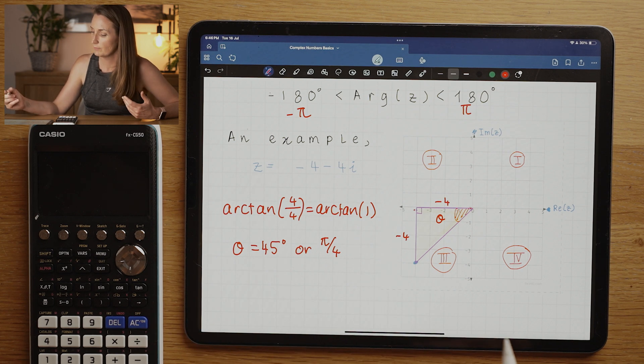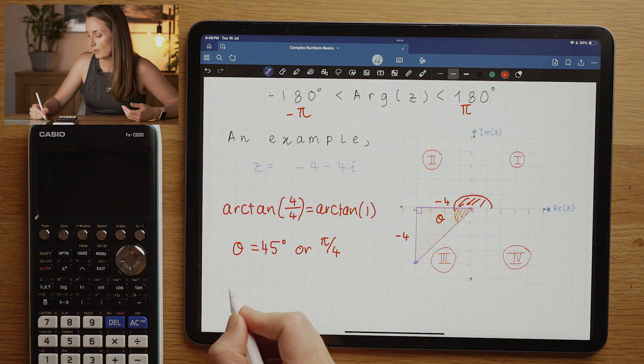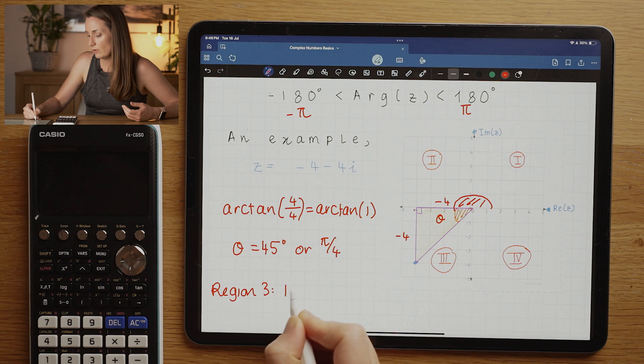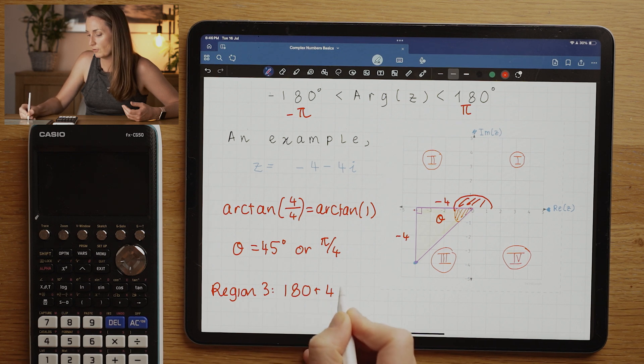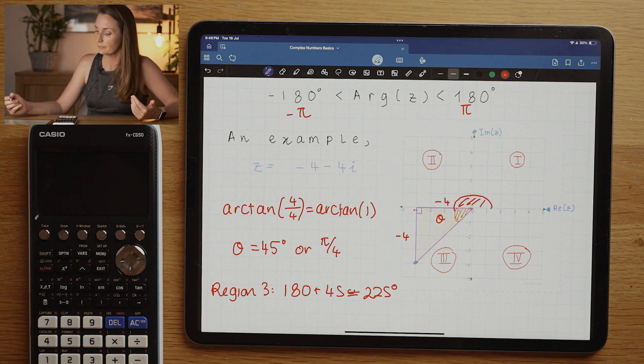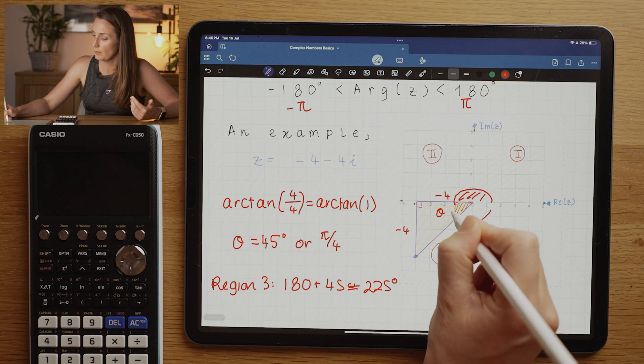Remember guys, you really have to learn those off by heart, they come up all the time. So in the traditional way we would have gone 180 here for region three. We would say 180 degrees plus 45 degrees, which would be 225 degrees. But that is too big.